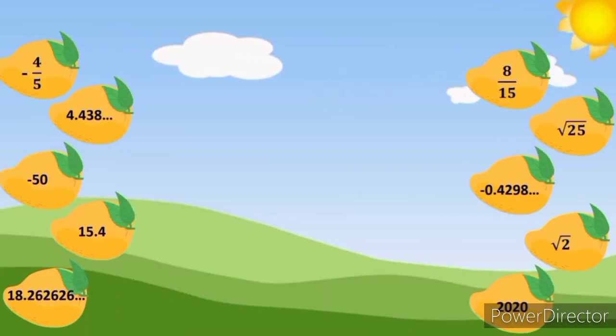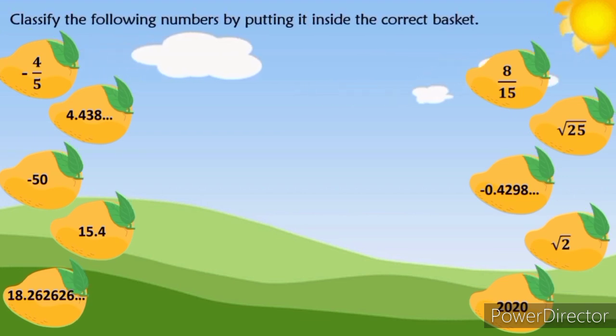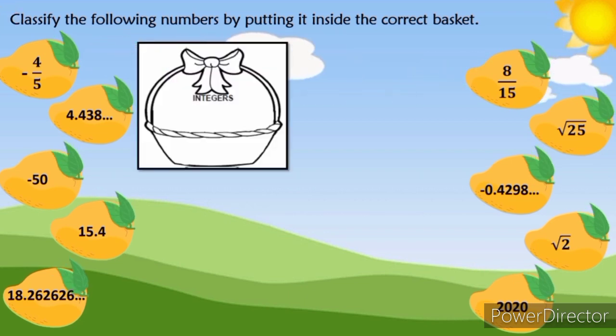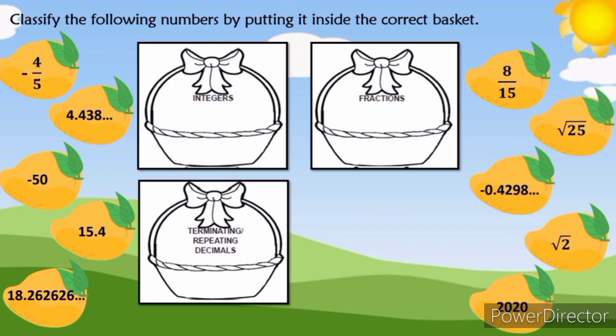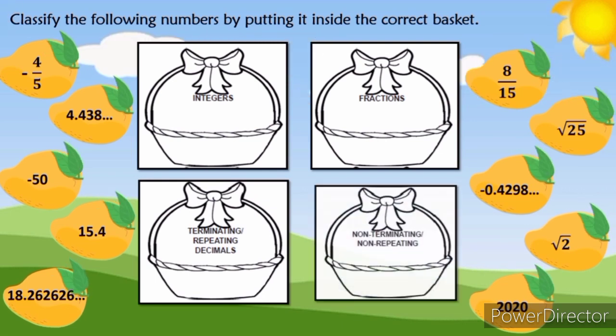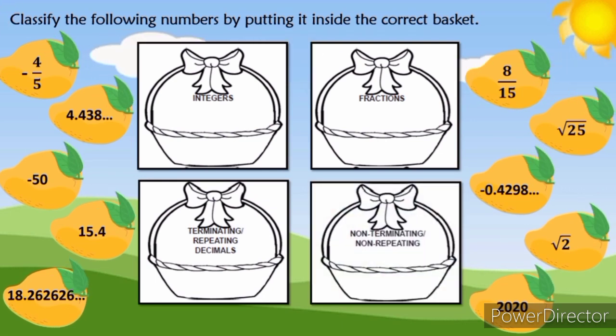As you can see, I have here 10 mangoes written inside with different numbers. Now, classify the following numbers by putting it inside the correct basket. A basket for integers, a basket for fractions, a basket for terminating or repeating decimals, and a basket for non-terminating or non-repeating decimals.